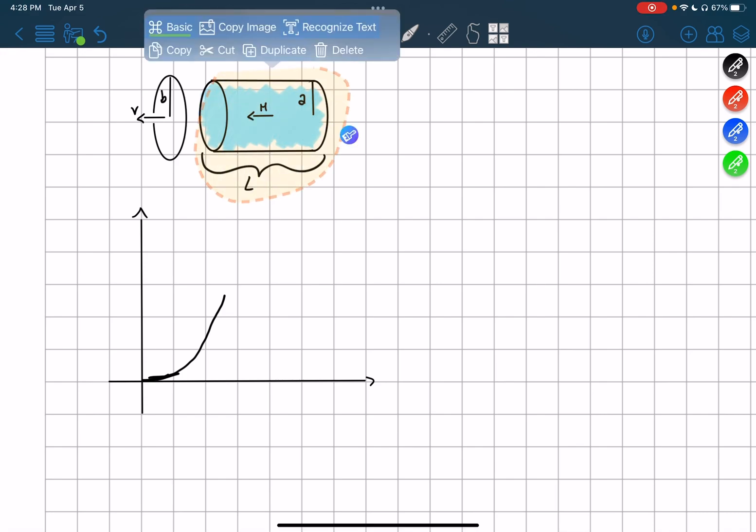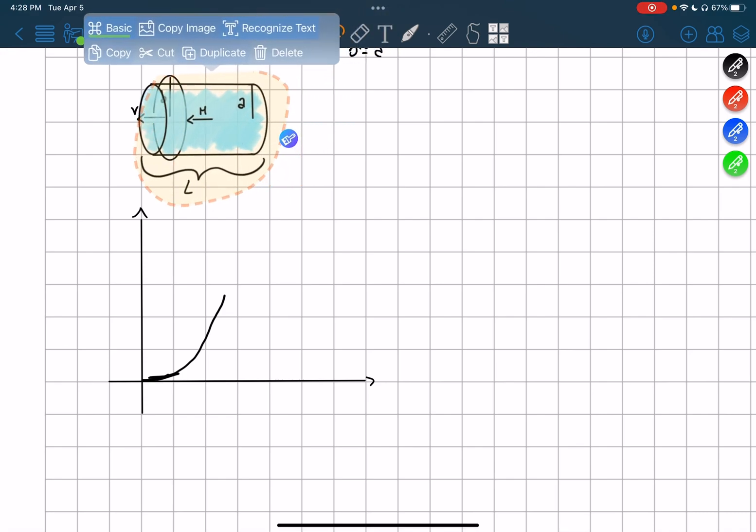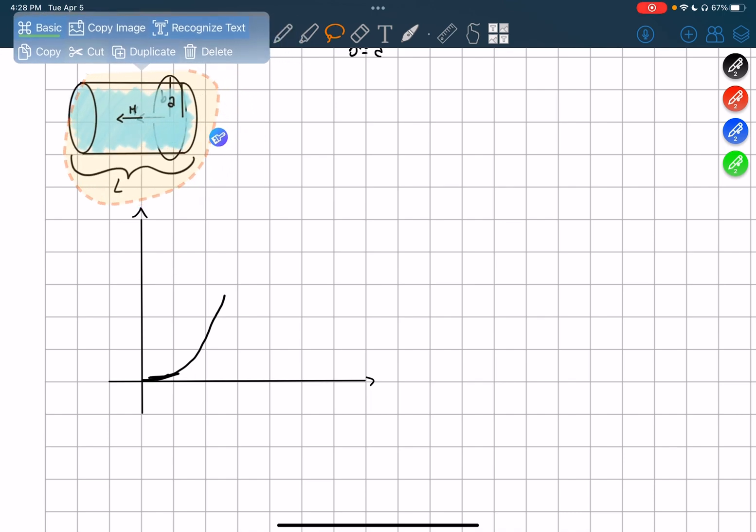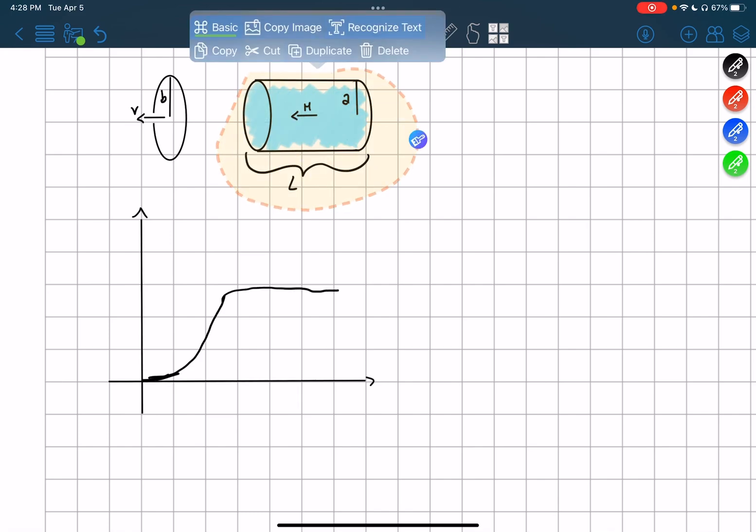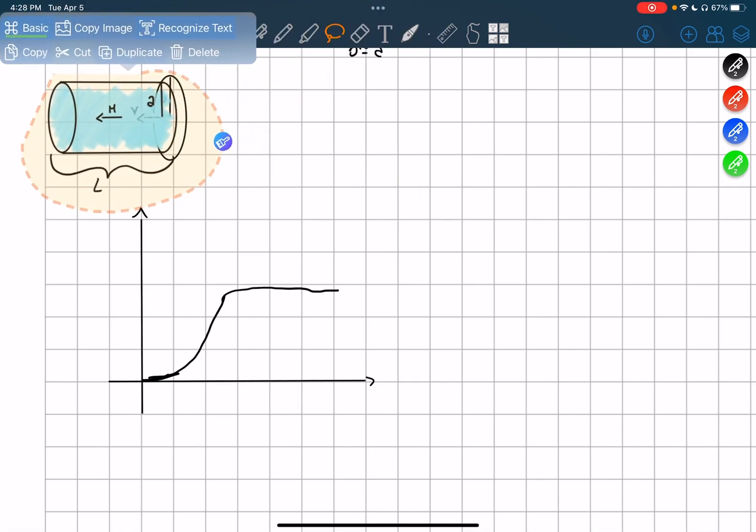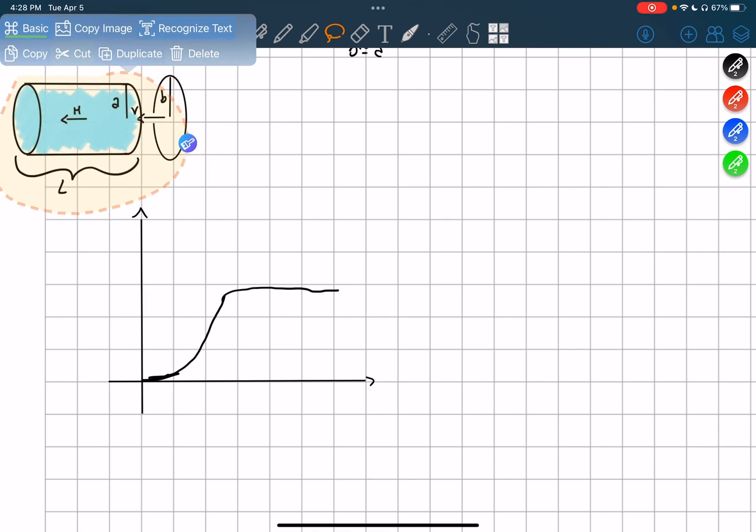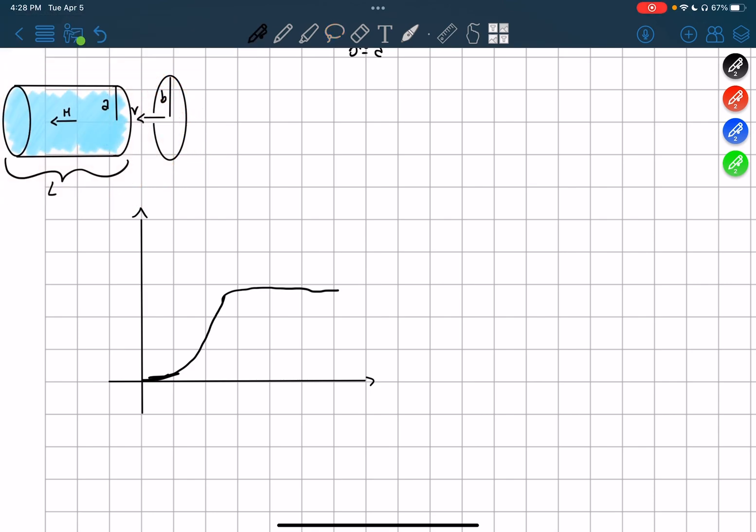And then, while it's inside and it's moving, the flux does not change with the same magnetization along. So we can say that this one stays constant. And then, once it's about to go out, it decreases again, going to zero. Because again, it gets farther away. So this is the flux over time.